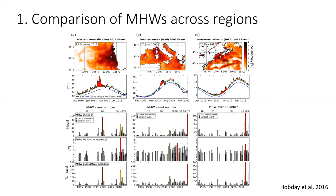As a comparison example, I use three events: the Western Australian event in the first column, the Mediterranean in the middle, and the Northwest Atlantic on the right. The top row shows temperature intensity above average; the second row shows the defined marine heatwave period in bright red. The bottom nine panels show how each event compared to past events in the historical record from around 1985 to the present, allowing us to see the current event relative to the largest on record.